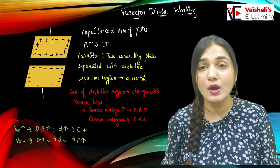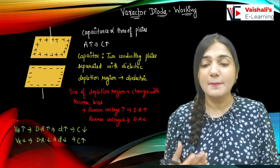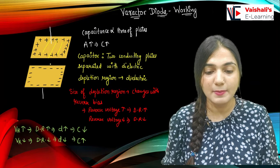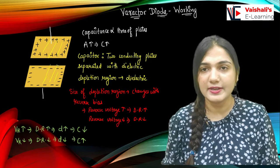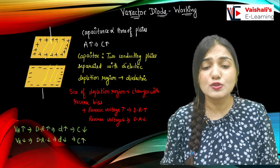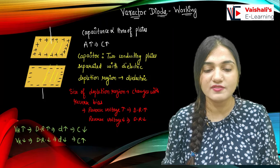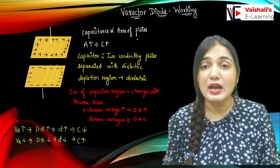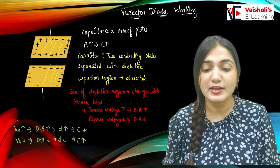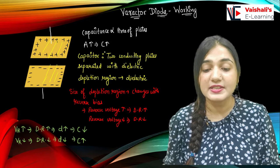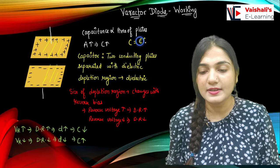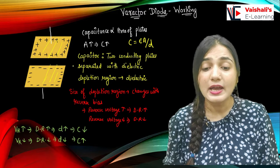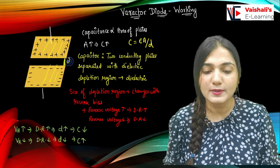To understand the working of the Varicap or Varactor diode, we should understand how a capacitor works. In a capacitor we have two parallel plates of conductor separated by a dielectric medium. These two conducting plates are supplied with different charges — positive on one side and negative on the other. Capacitance is directly proportional to the area of the plates. The formula is C = εA/D, so capacitance is directly proportional to area and inversely proportional to the distance D between the two plates.